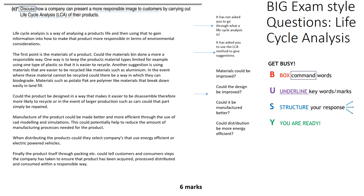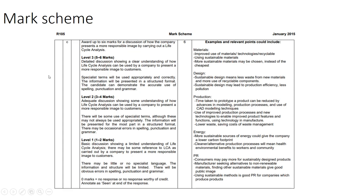Finding the product itself through packaging could tell customers and consumers the steps the company has taken to ensure the product has been acquired, processed, distributed, and consumed in a responsible way. If I was marking that, I would definitely give it six marks.